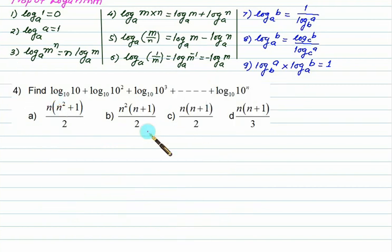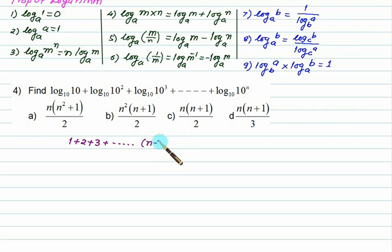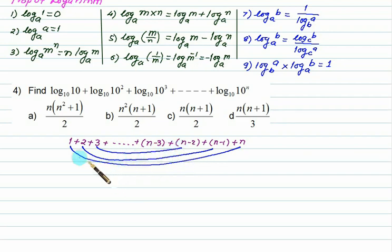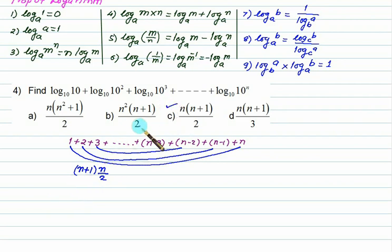For the next problem, log(10) to base 10 = 1, log(10²) to base 10 = 2, so we have 1 + 2 + 3 + ... + (n−2) + (n−1) + n. Pairing terms: 1 and n give n+1, 2 and n−1 give n+1, 3 and n−2 give n+1, and so on. There are n/2 such pairs, so the sum is n(n+1)/2. Choice C is correct.